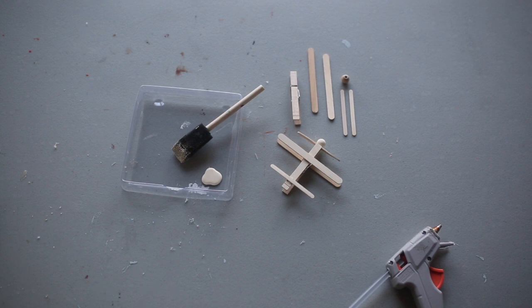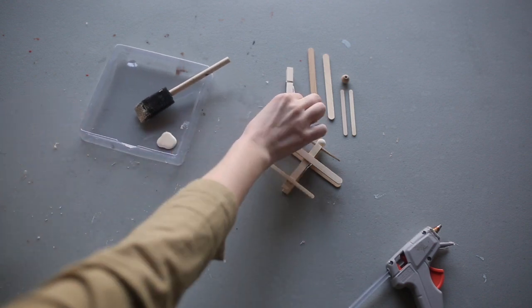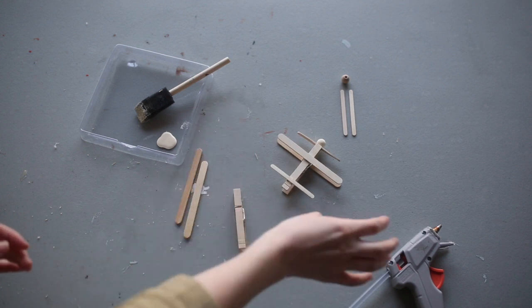So once you've grabbed your materials, let's go ahead and get started. Okay, so the first step is gluing your two popsicle sticks to the top and bottom.